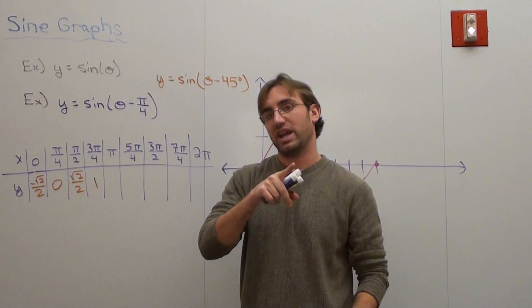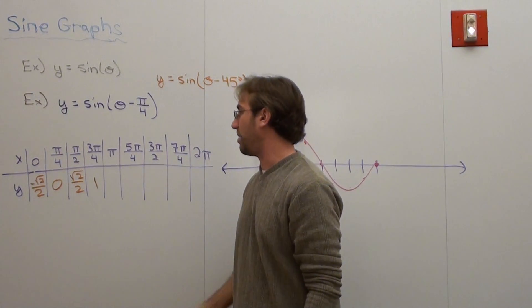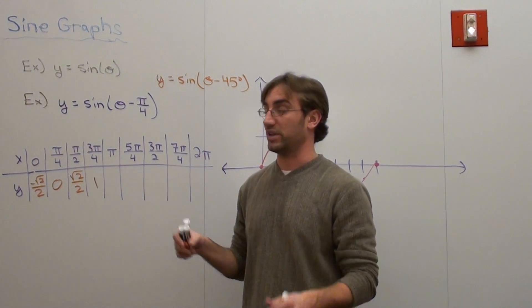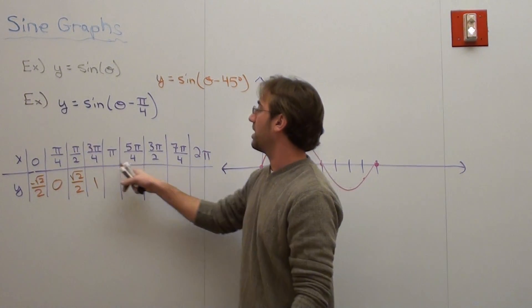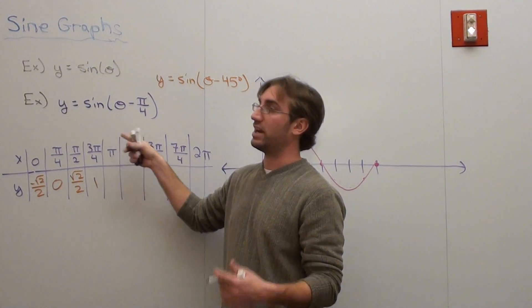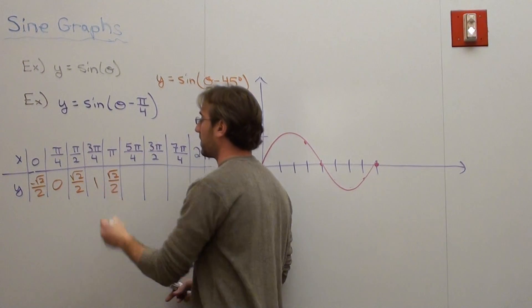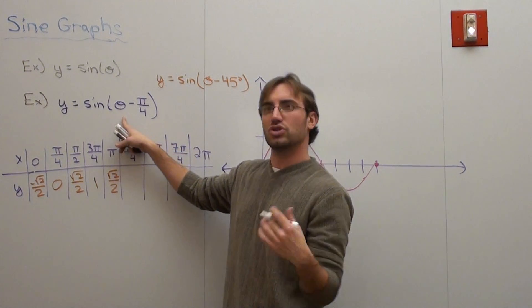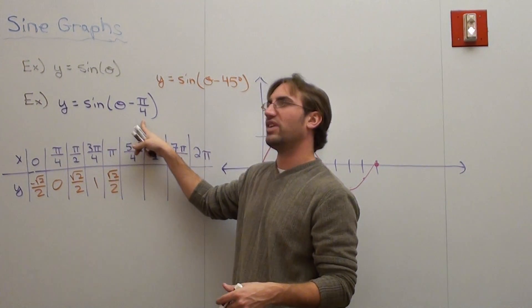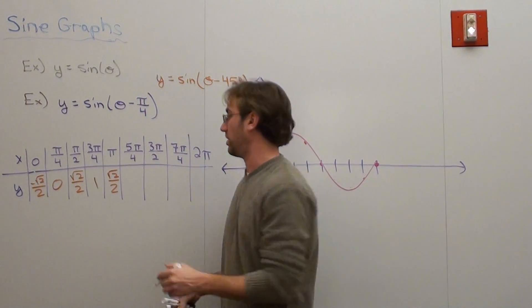Some people right now can actually kind of figure out what's going on here. Some people are like, I don't know, please just keep going. Sine of pi is 180. 180 minus 45 is 135. Sine of 135 is root 2 over 2. Sine of 5 pi over 4 is 225. 225 minus 45 is 180. Sine of 180 is zero.